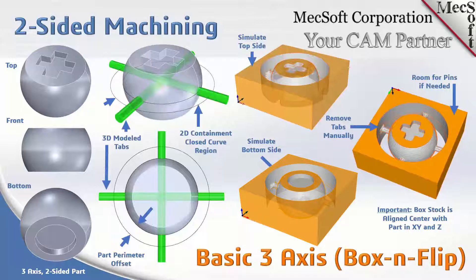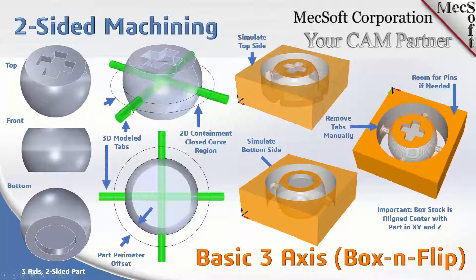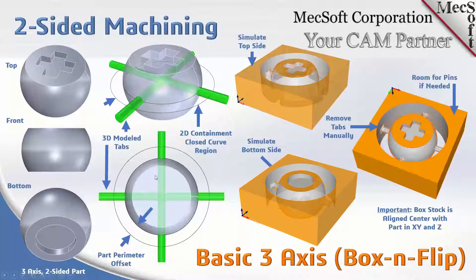You can't machine this from one side because there are undercuts you can't reach. In this technique, instead of using tabs or bridges we model the tabs into the part — that's what you see in the middle row in green. We extruded solid cylinders through X and through Y. The length of these cylinders isn't critical, only that they extend past the part significantly enough so you can get a tool in there and cut it out. So we have two rods: X and Y.